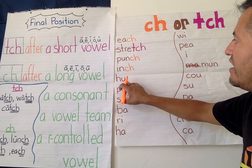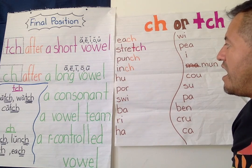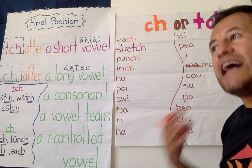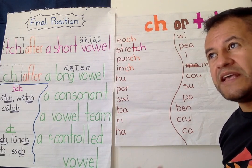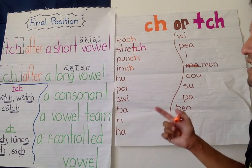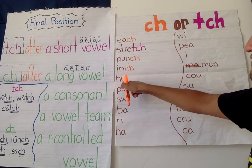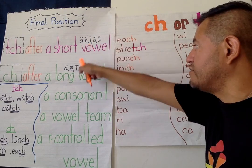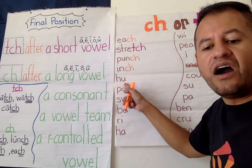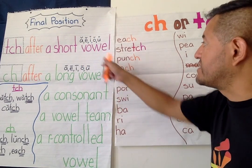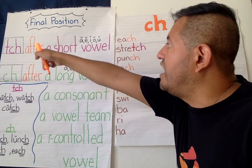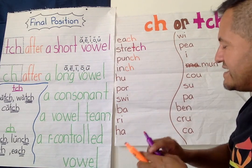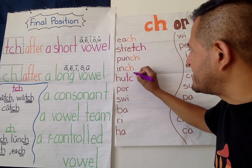H-U — "hutch." The last sound I hear is an "uh" sound. So I'm going to look at my clues — it is a vowel. Is it long or short? H-U, like "up" — it's a short vowel. So it's going to be H-U-T-C-H, "hutch." T-C-H. A hutch is kind of like cabinets.